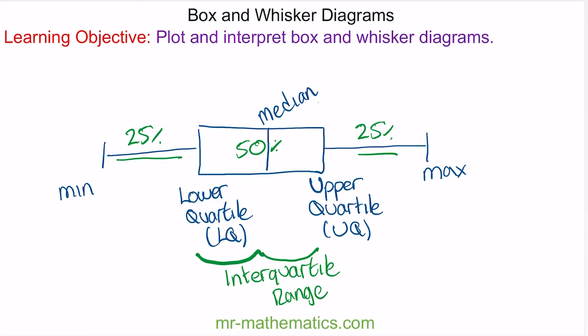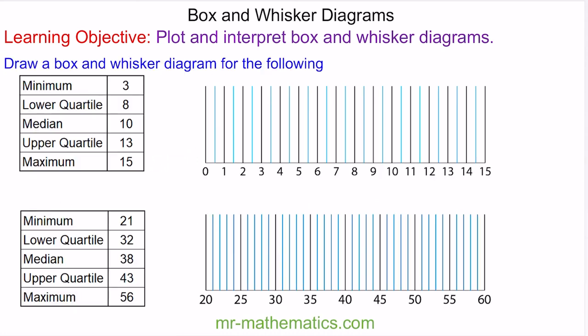Let's draw a box plot for some data points. We've been given the minimum, the lower quartile, median, upper quartile and maximum, and from these we can create our box plot. The minimum value is at 3, so we'll draw the whisker here. And the maximum is at 15, so we'll draw this here.